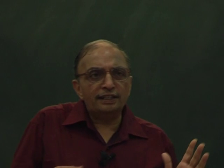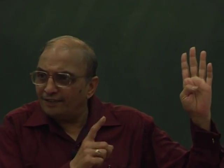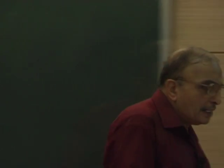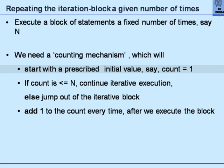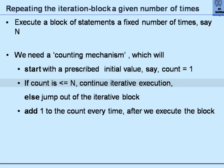What is the child's way of saying whether he has to continue or not? He will look at the current count — say it is 4, say less than 5, I have to continue. In exactly the same fashion, we need to execute a block of statements n times. We need a counting mechanism where we set some count equal to 1, execute the iteration block, increase count by 1 and repeat, until the count exceeds n, at which point we get out of the iteration.